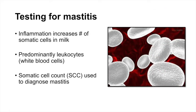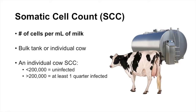An increase in mastitis or inflammation typically results in an increase in what we call somatic cells within the milk. Somatic cells, or white blood cells, are predominantly leukocytes — the white blood cells that occur as a result of the dairy cow's immune system responding to the bacteria that has colonized her mammary gland. The somatic cell count is the terminology we use to diagnose mastitis in the dairy industry. The somatic cell count, or SCC, refers to the number of cells per milliliter of milk.